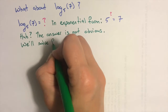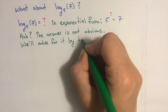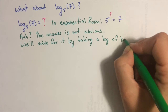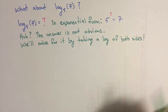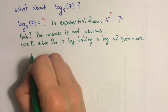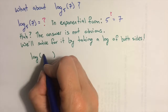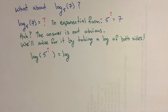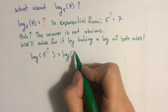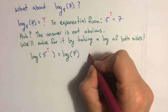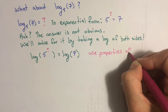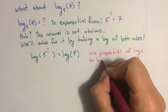Well, I do know one thing to do. I know how to solve equations when there's a variable in the exponent, so I'm going to take a log of both sides and see if I can solve for that question mark. I've decided to use the common log, log base 10, but really any logarithm would do. So now I have log of 5 to the what equals log of 7. I can use that power property of logarithms to pull the question mark down in front.